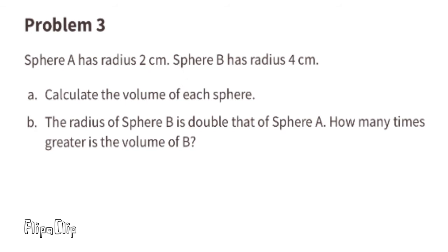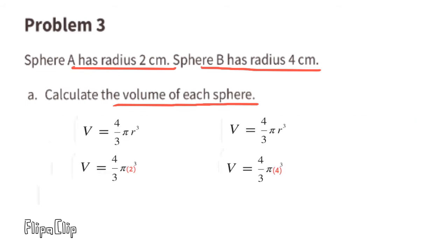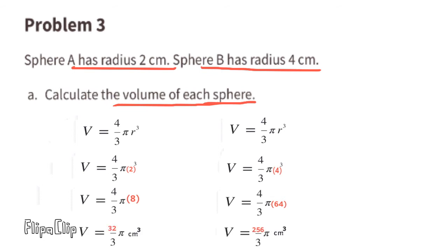Problem number 3: Sphere A has a radius of 2 centimeters and Sphere B has a radius of 4 centimeters. Part A: calculate the volume of each sphere. Substituting R with 2, we get 2 to the 3rd power equals 8, giving a volume of 32 over 3 times pi centimeters cubed. Substituting R with 4, we get 4 to the 3rd power equals 64, giving a volume of 256 over 3 times pi centimeters cubed.